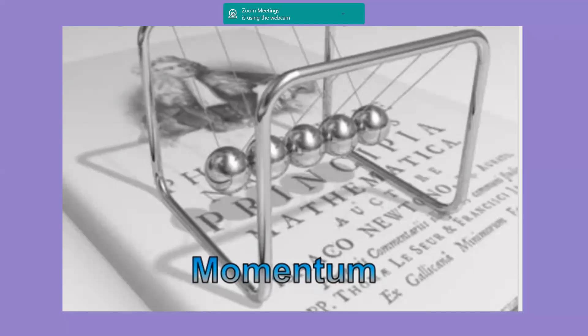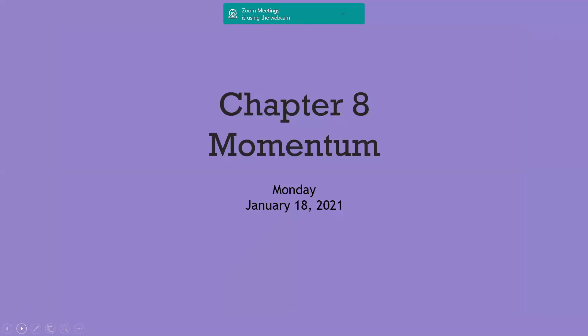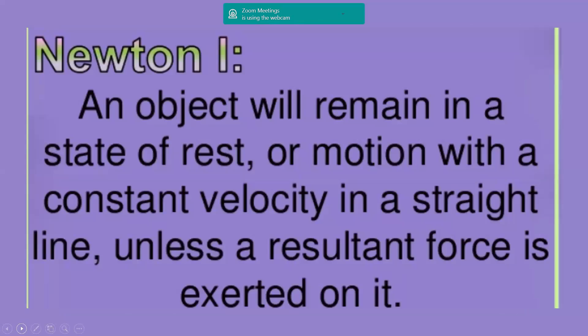Momentum. This is chapter eight in our physics book. Before talking about momentum, let's revise the three Newton's laws. The first Newton's law says that an object will remain in a state of rest or motion with a constant velocity in a straight line unless there's a resultant force exerted on it.